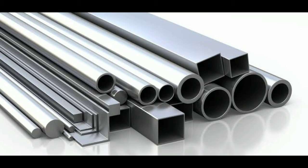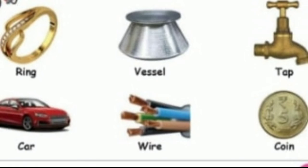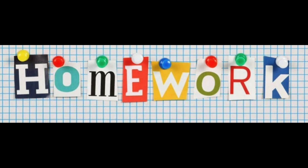We use metal in our daily life in many ways. Here are some examples: ring, vessel, tap, car, wire, and coin. These are some of the things we use day to day in our life which are made up of metals.